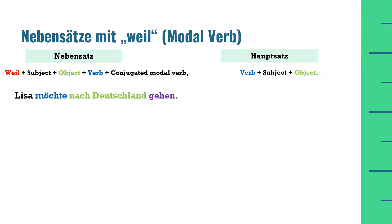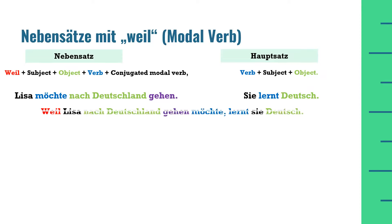Example: 'Lisa möchte nach Deutschland gehen' — Lisa would like to go to Germany. 'Sie lernt Deutsch' — she is learning German. Combined: 'Weil Lisa nach Deutschland gehen möchte, lernt sie Deutsch.' In the Nebensatz: 'weil' first, then subject 'Lisa', then 'nach Deutschland', then main verb 'gehen' in infinitive form, then modal verb 'möchte' conjugated for 'Lisa' at the last position. The Hauptsatz starts with 'lernt' — conjugated for 'sie' — then subject 'sie', and 'Deutsch' at the last position.